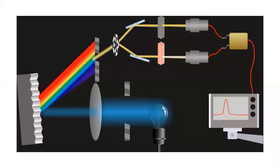The last detector is the charge-coupled device, which is called CCD. This is similar to the diode array detector. Instead of photodiodes, you have photocapacitors. In every photocapacitor, there are detector elements, and there are thousands to millions of photocapacitor elements in a CCD. Just as with the other detectors, the photocapacitors convert photons into electrons or electrical energy.